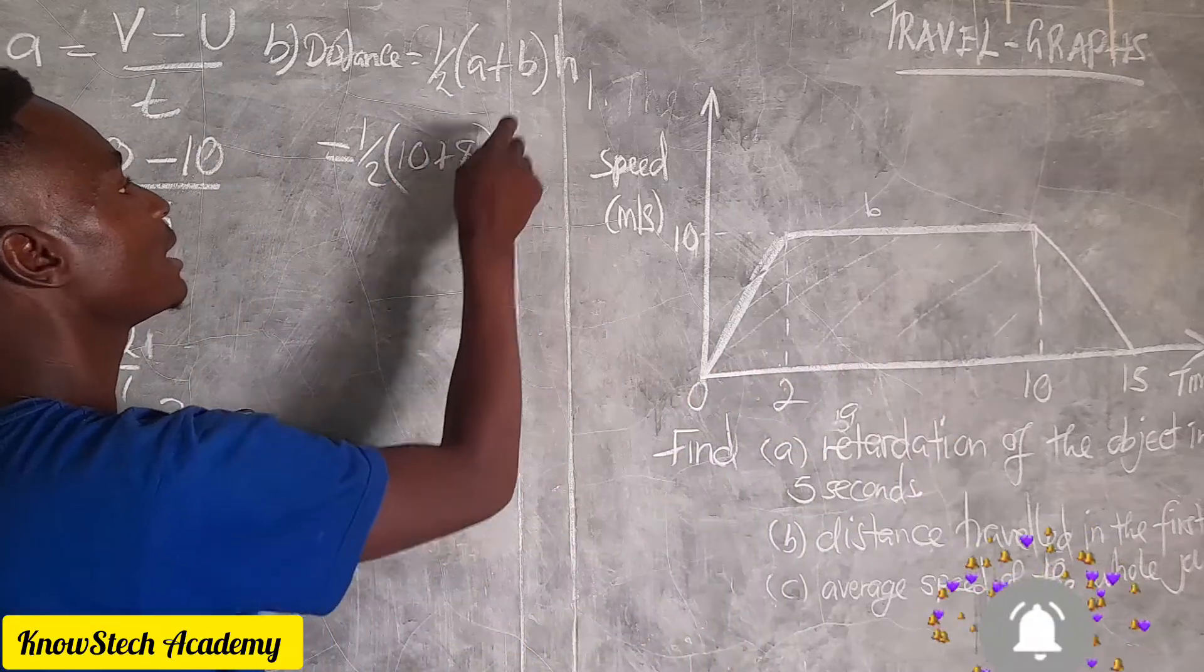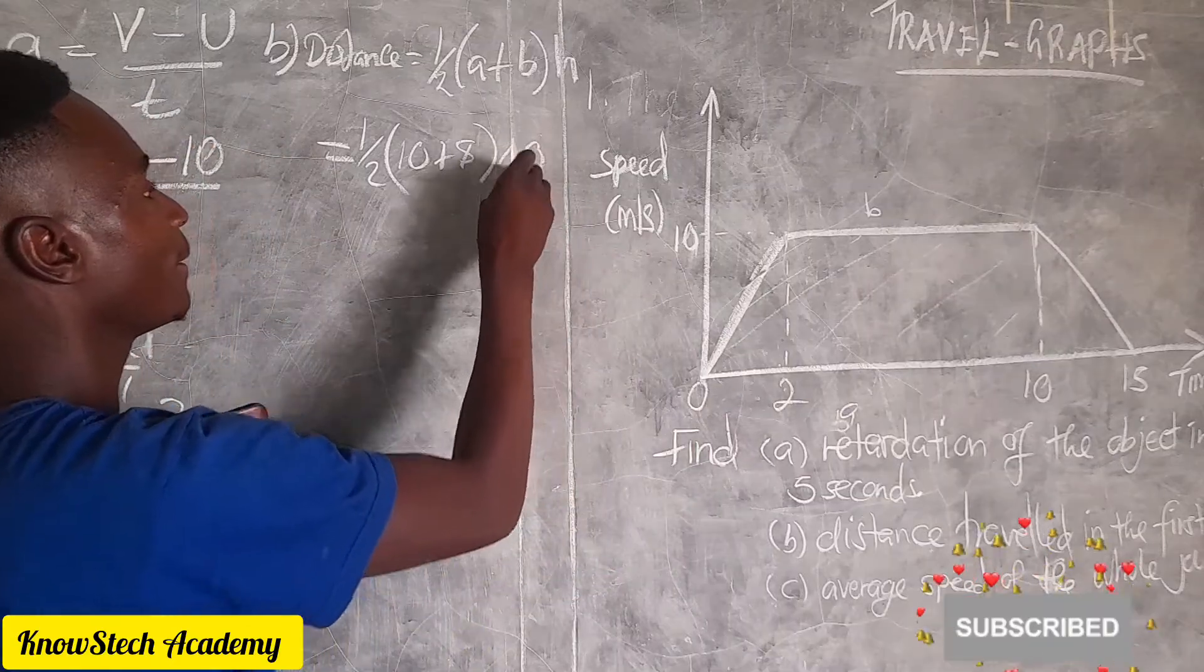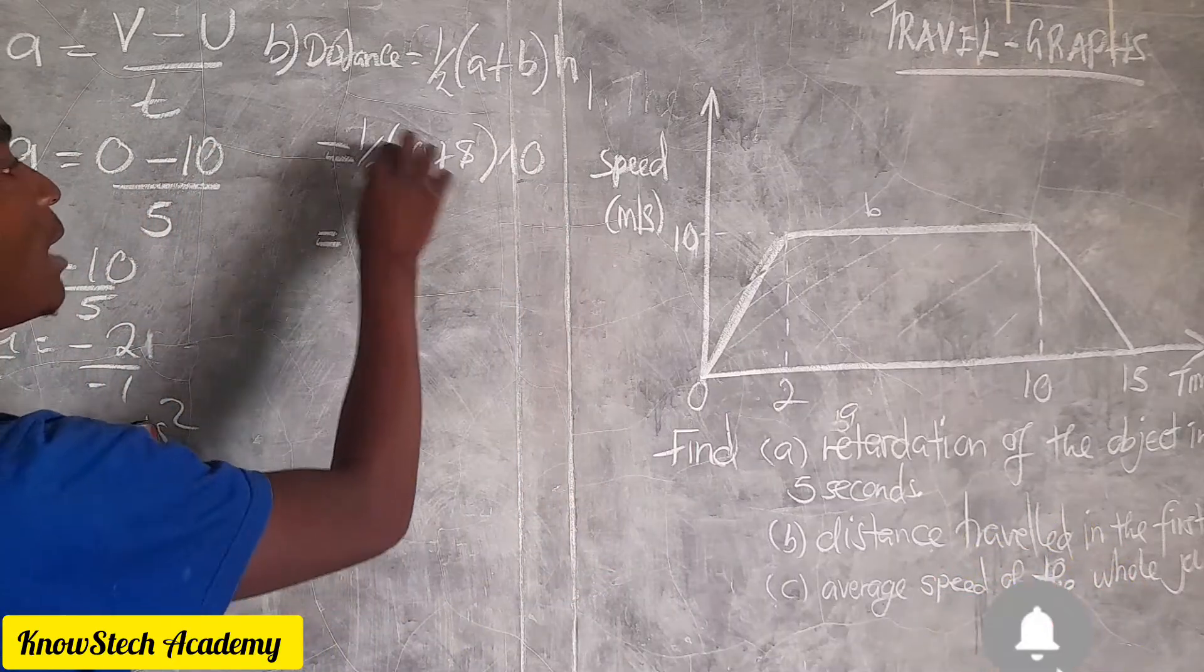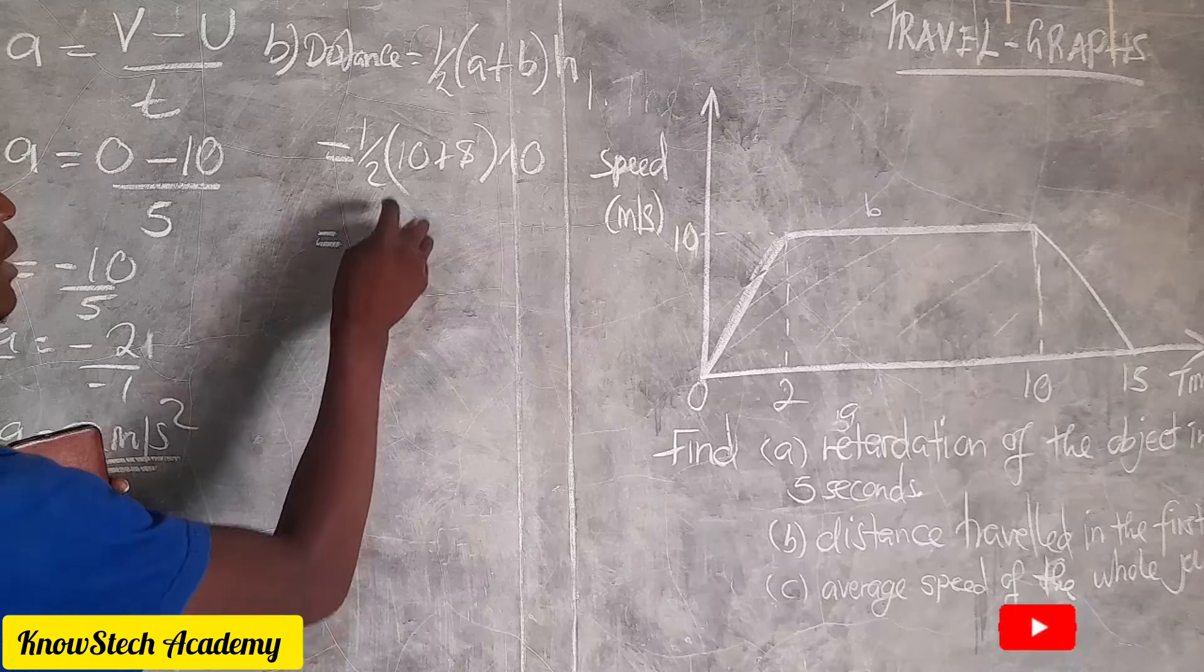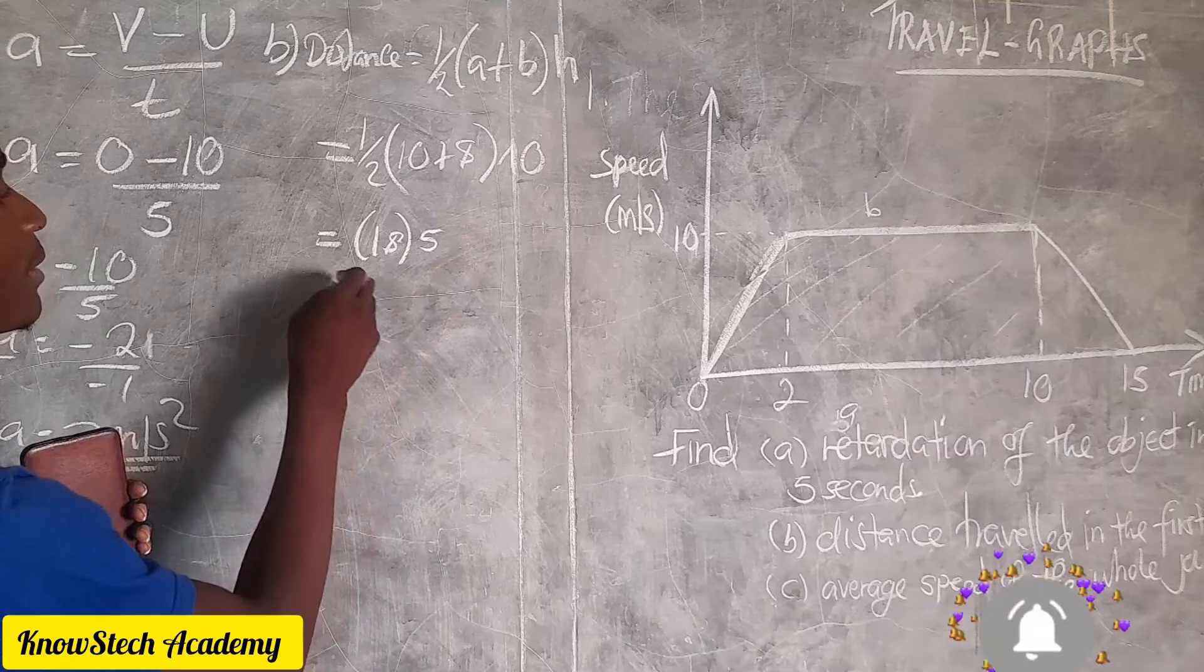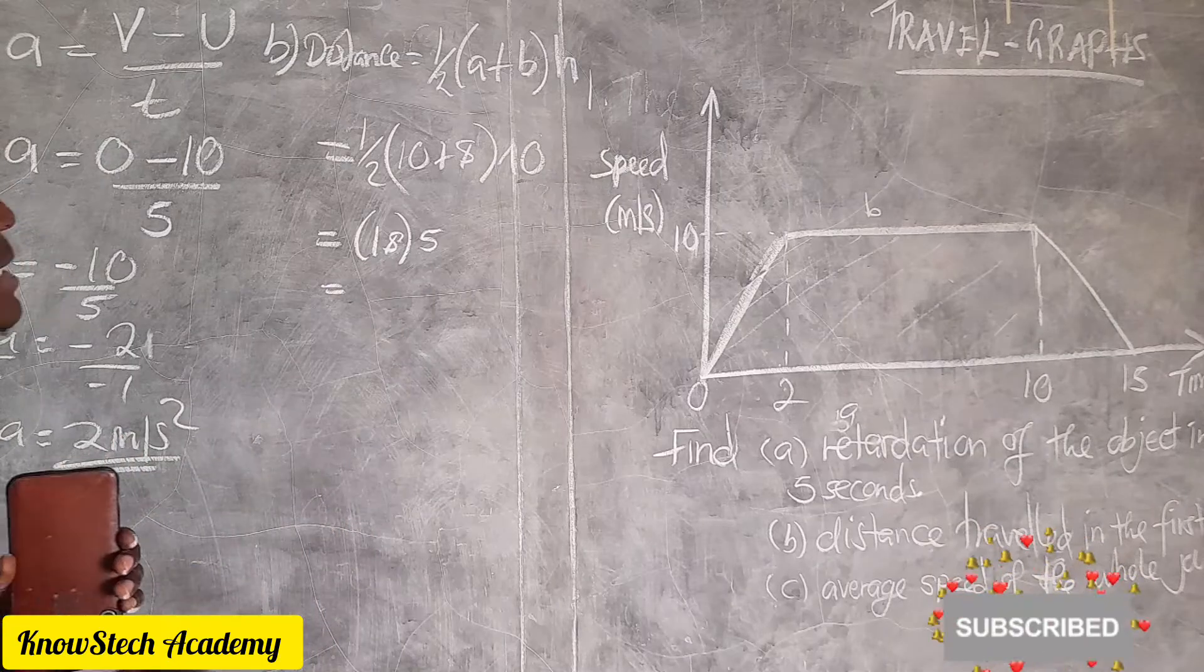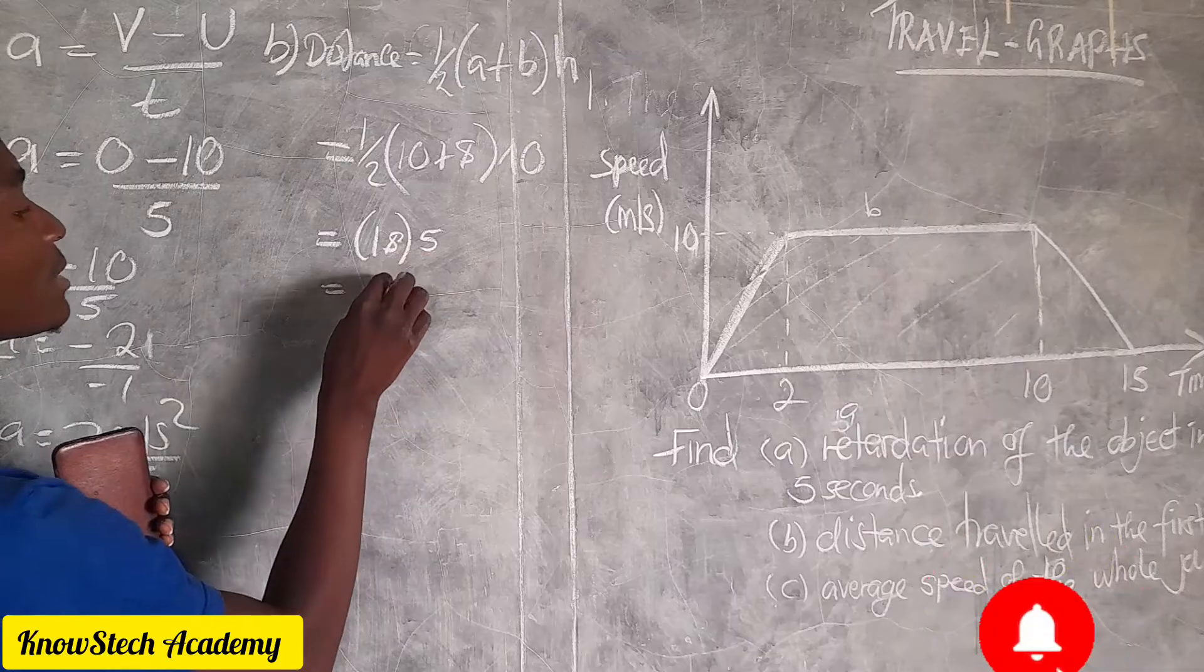Then our h which is the height is also 10. Then half of 10 is 5, 10 plus 8 is 18, then we have 5 outside. Then 5 times 18, 5 times 8 is 40.